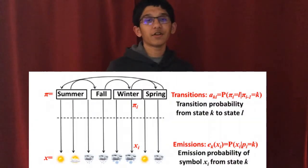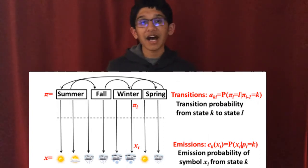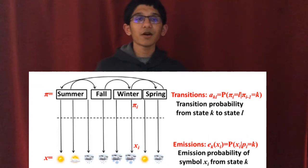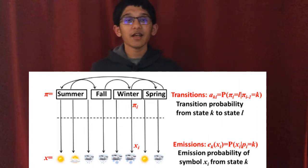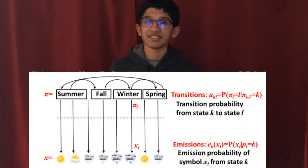The probability of a certain hidden state inferring an observed state varies depending on context. For example, it makes more sense that the probability of it being windy during winter will be greater than it being sunny during winter. The picture here represents a great example of how these actually work. Note that the hidden states are marked as pi, while the observed states are marked as the vector x. The emission probability is simply the probability that a certain observed state occurs given the hidden state. Meanwhile, the transition probability is the probability that a hidden state moves from one hidden state to another.